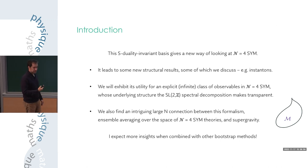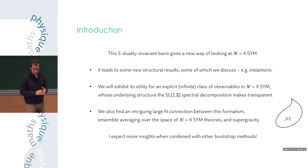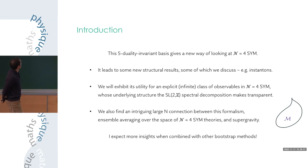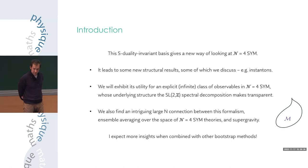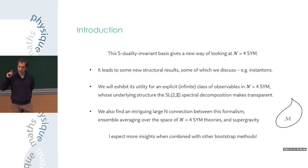I'll try to convince you by presenting a few different facets of what this gives us. First, it leads to some new structural results, for example pertaining to the structure of instantons in the theory. We'll examine a certain explicit infinite class of observables which can be determined quite explicitly and which, when cast in this language, become extremely simple — their true nature is revealed. Finally, in the large N limit there are interesting relations between this formalism and ensemble averaging in ADS-CFT, and we can find a version of these statements that we can prove.